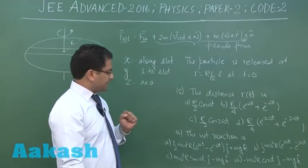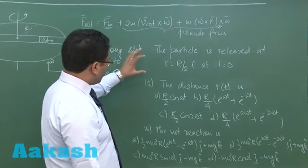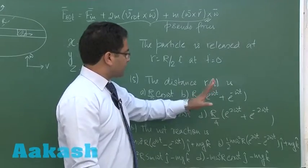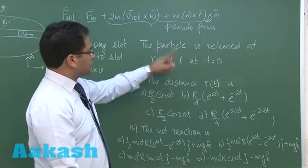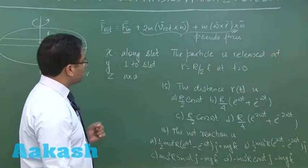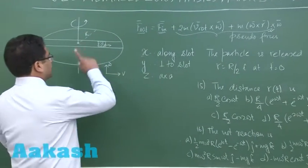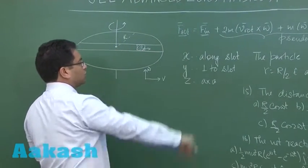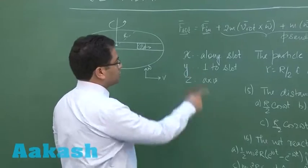Now what we should see is what would be the distance R as a function of t. And initially the particle is released at a distance R by 2. Now here what you have to see is that as it starts moving the surface is smooth. Due to centrifugation it would go outside. Now you could see that along the radial direction, because the normal force, one is mg, that is a normal force inertial.